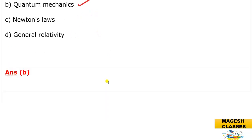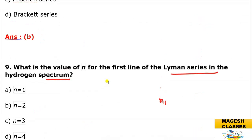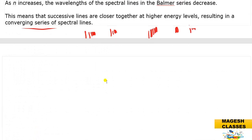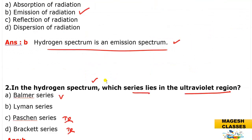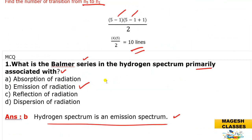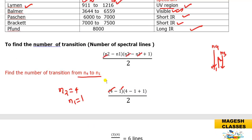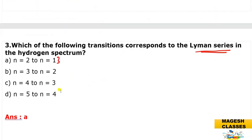This is the end of our presentation. In this presentation we have discussed some of the important formulas related to the hydrogen spectrum series and a shortcut to find out the spectral lines and for the calculation. I hope that it is useful. Thank you for watching this video.